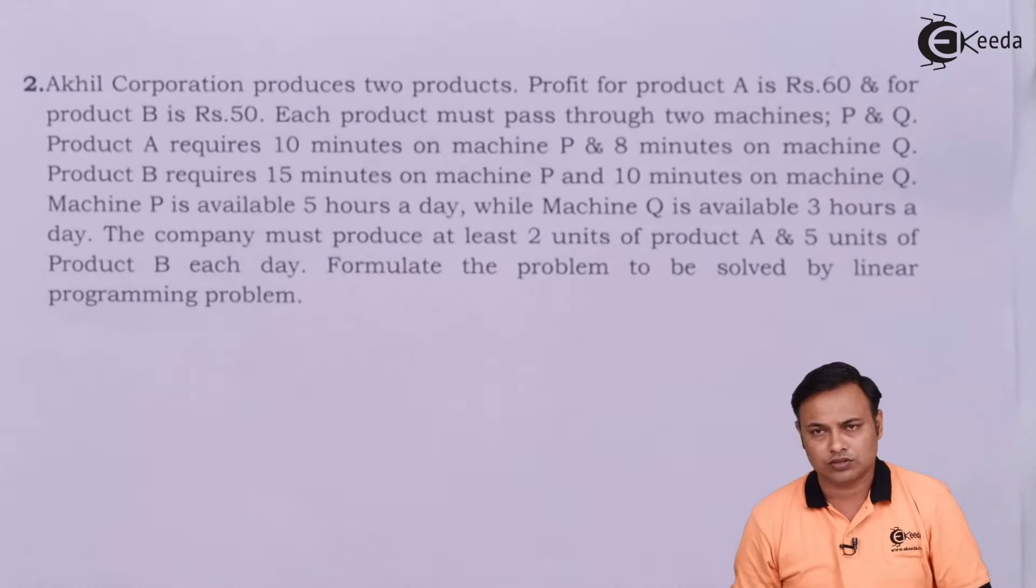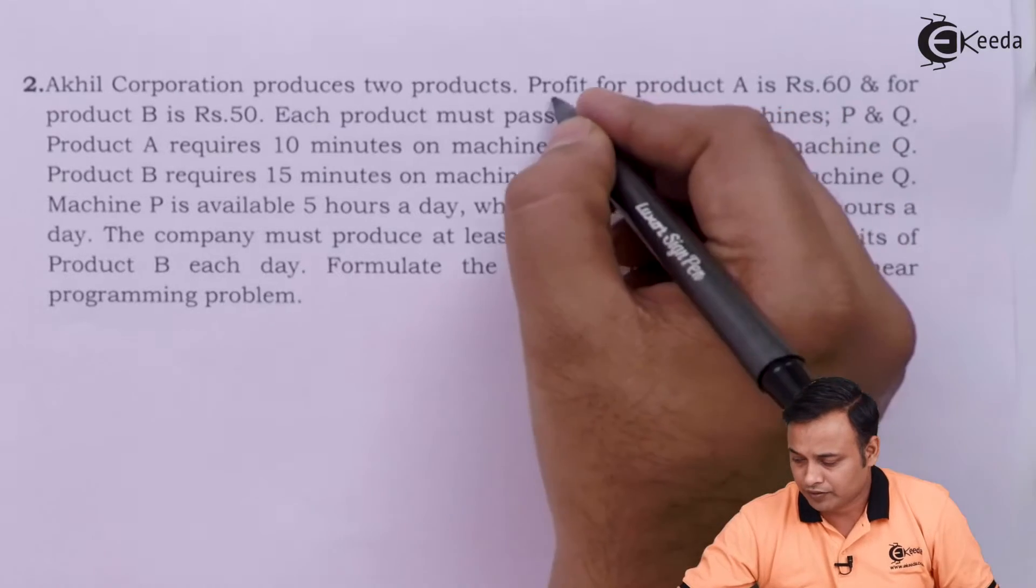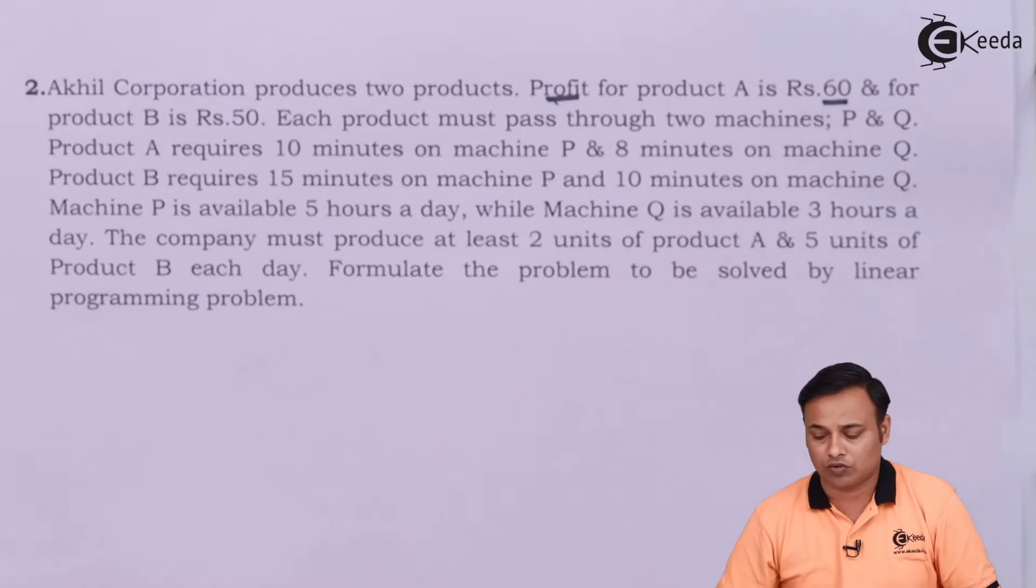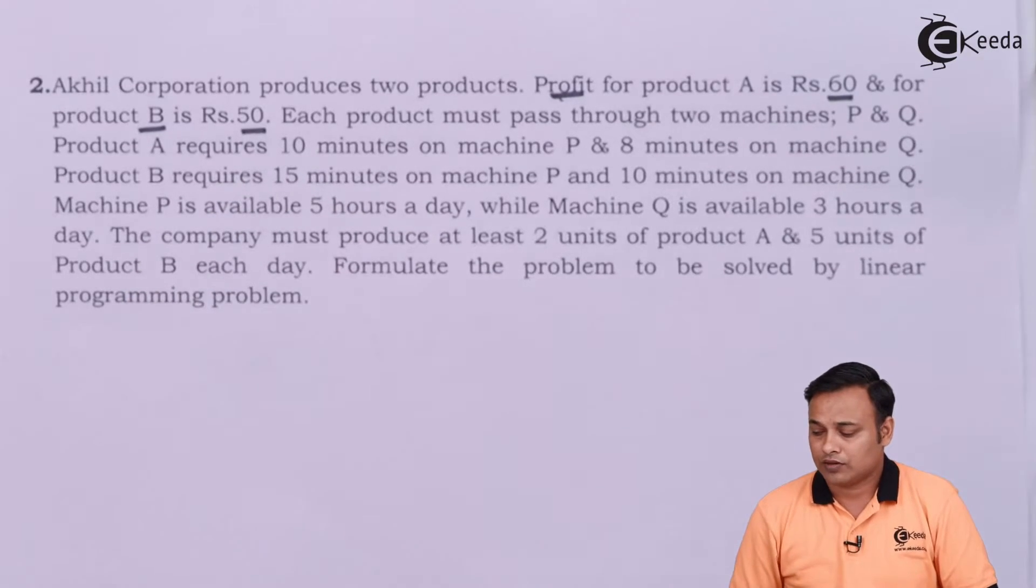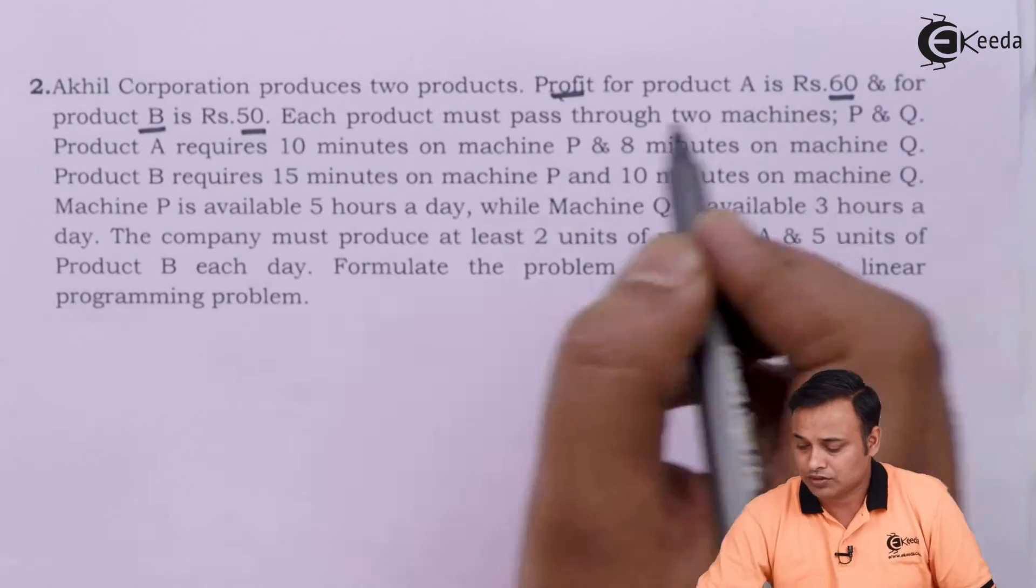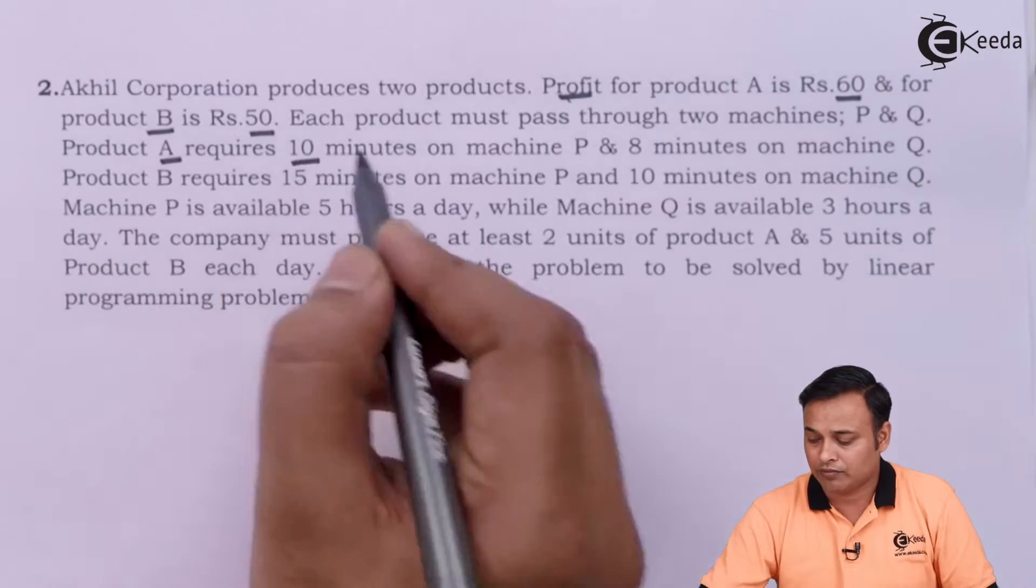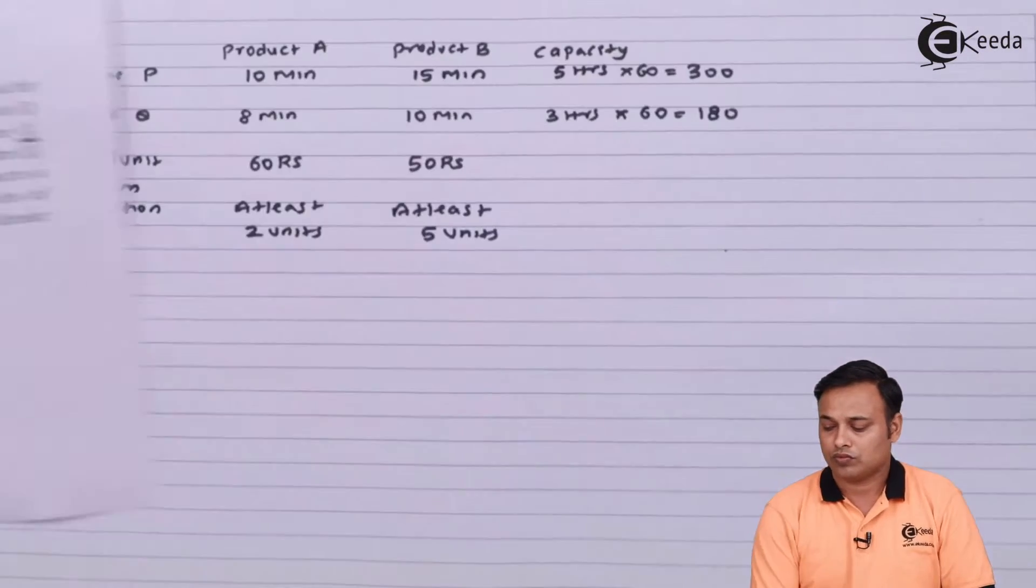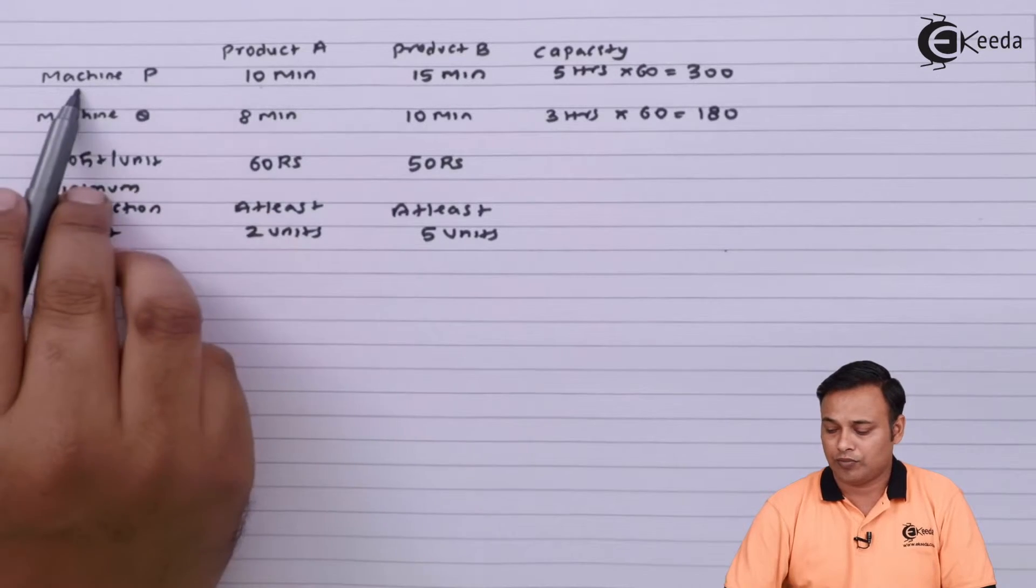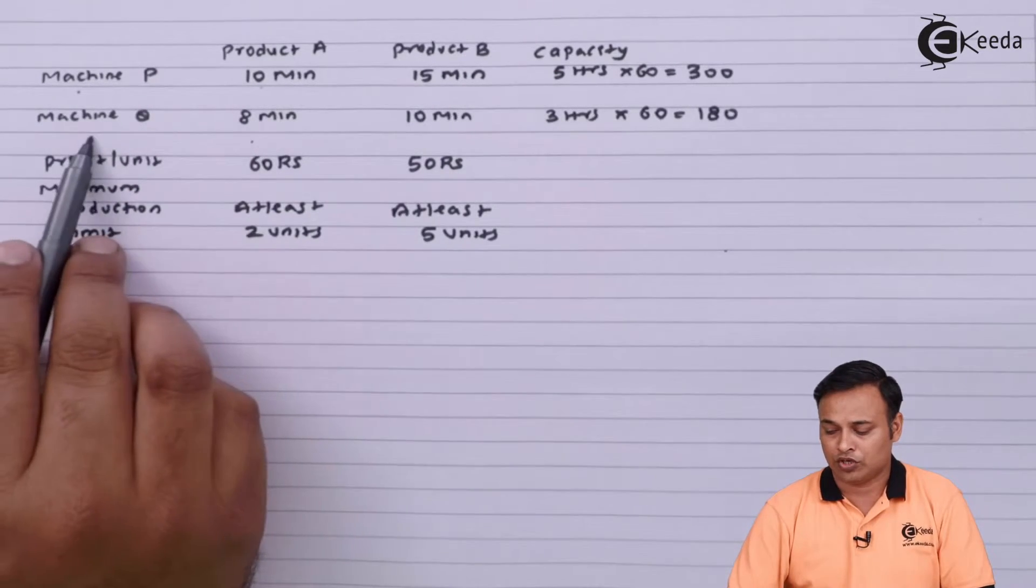So what I have done is I have simply tabulated the whole data. This was the original question. This is my profit: for A 60 rupees, for B it is 50 rupees. Then there are 2 machines. A requires 10 on machine P, 8 on machine Q.